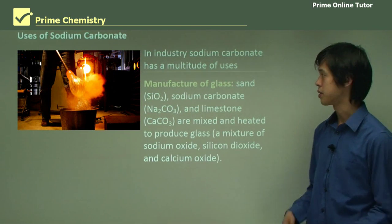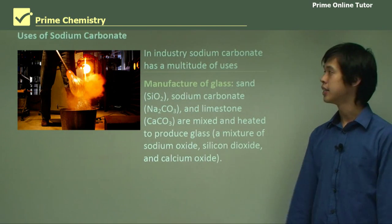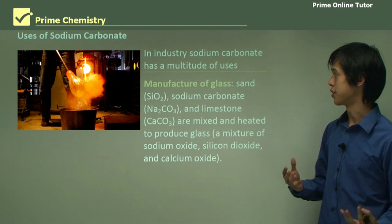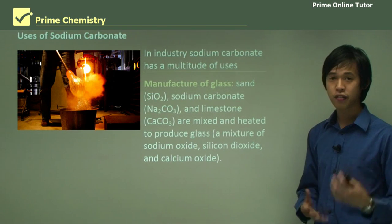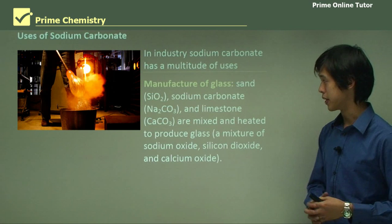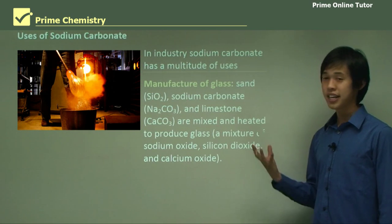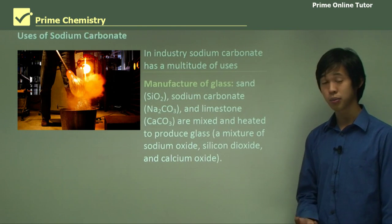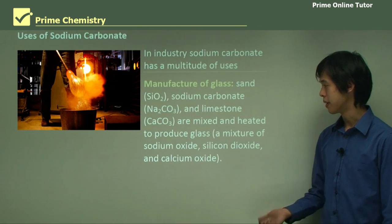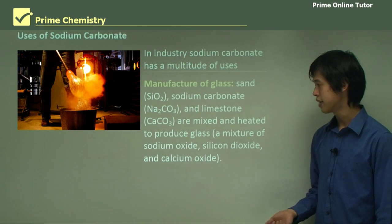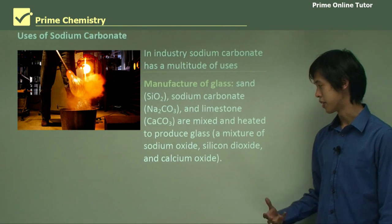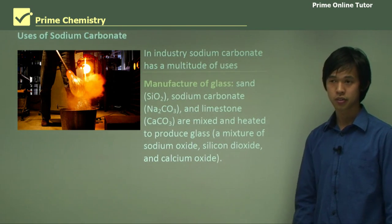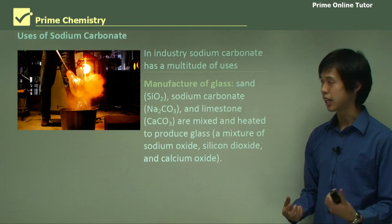So what does sodium carbonate actually do for us? In industry, it has lots of uses. The manufacture of glass is probably its biggest use. Sand, as you know, is silicon dioxide. Sodium carbonate and limestone, which is calcium carbonate, are mixed together and heated to produce glass, which is a mixture of sodium oxide, silicon dioxide, and calcium oxide.